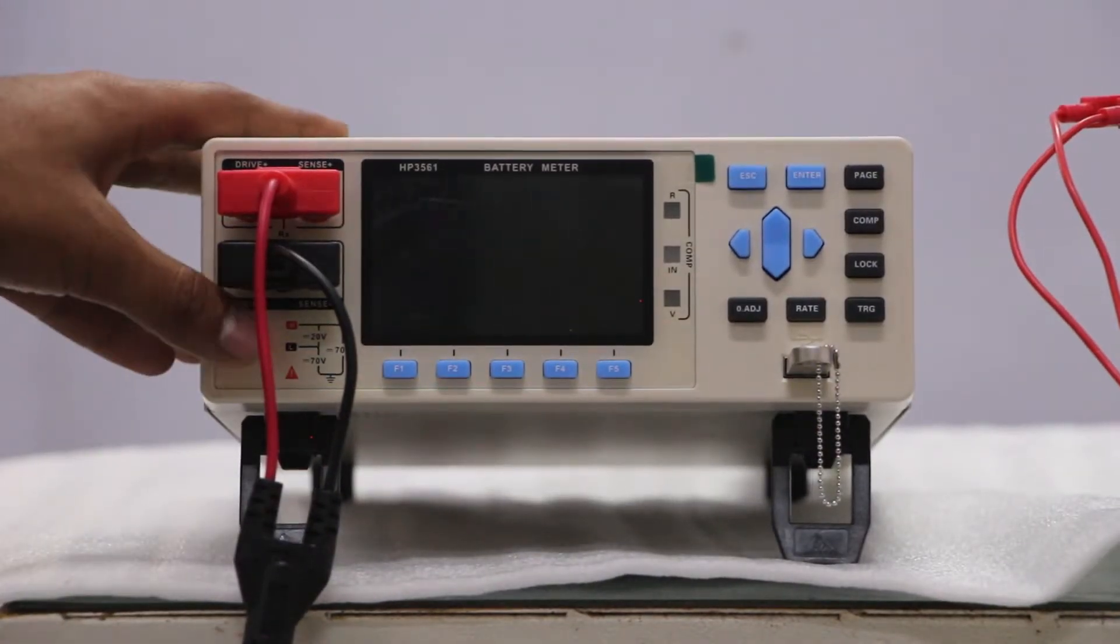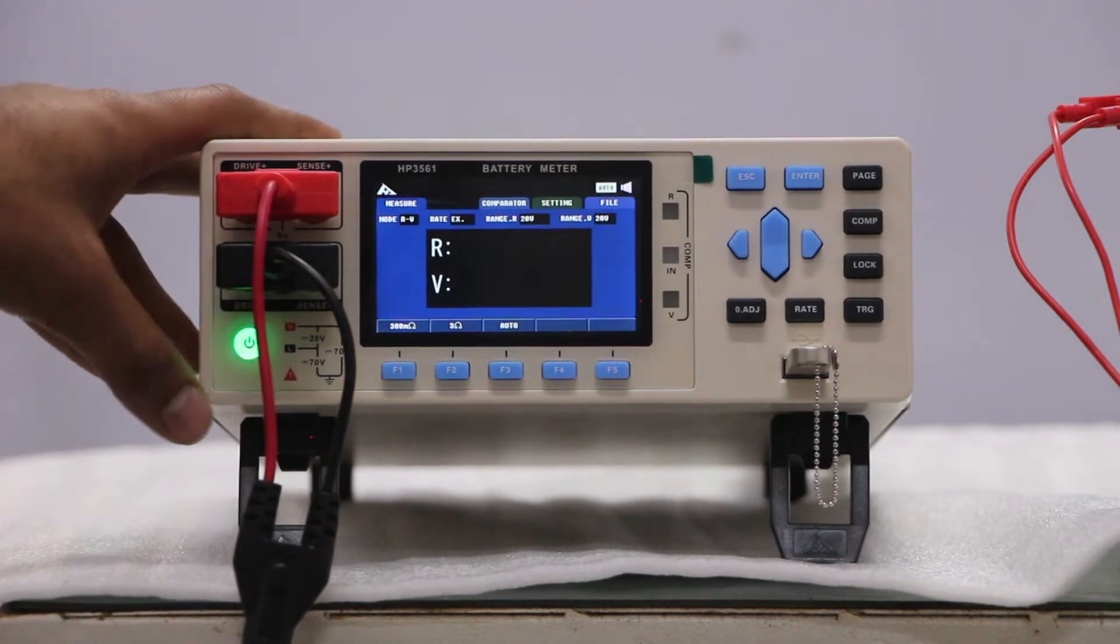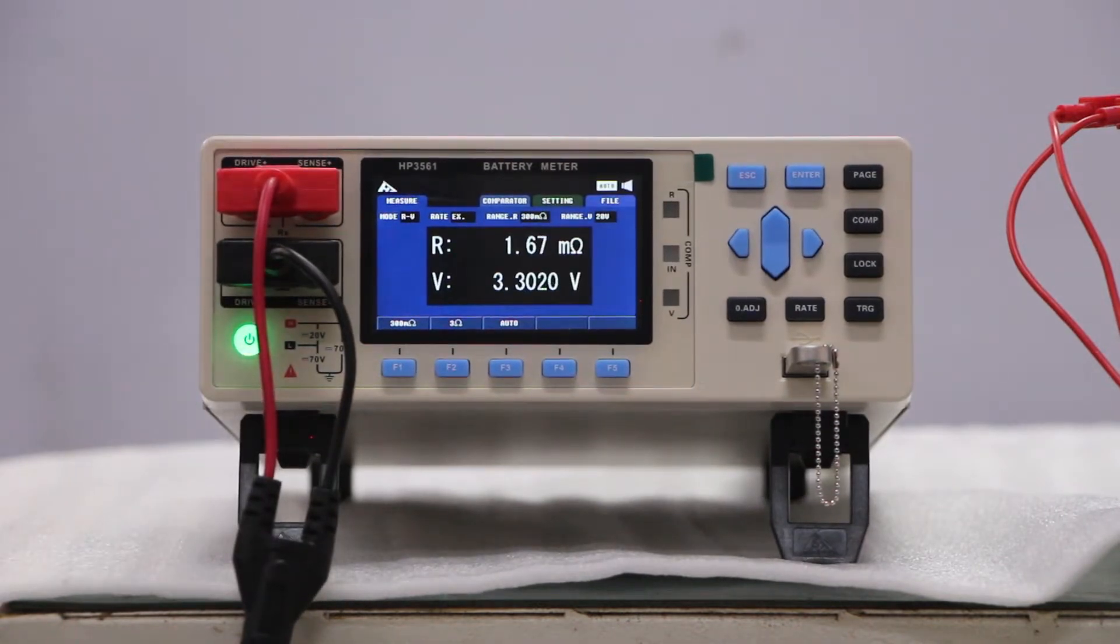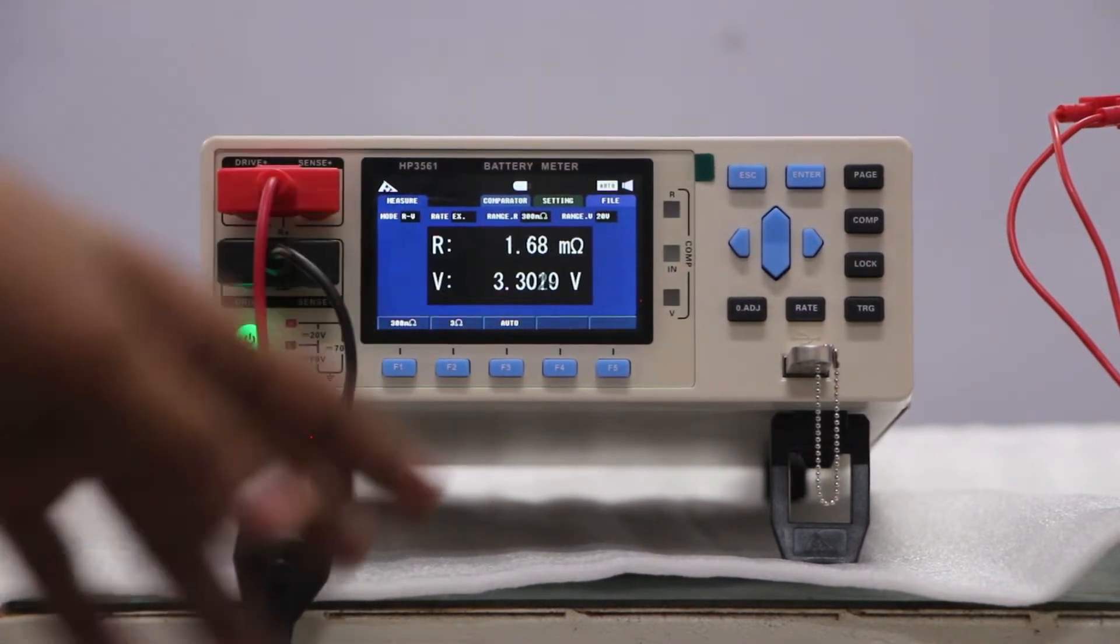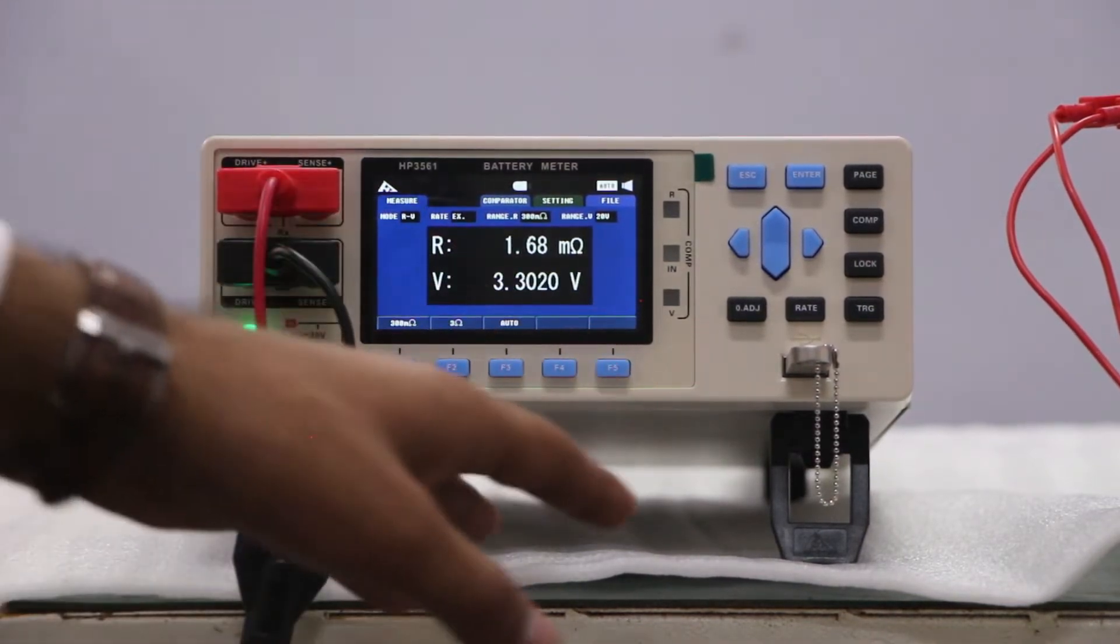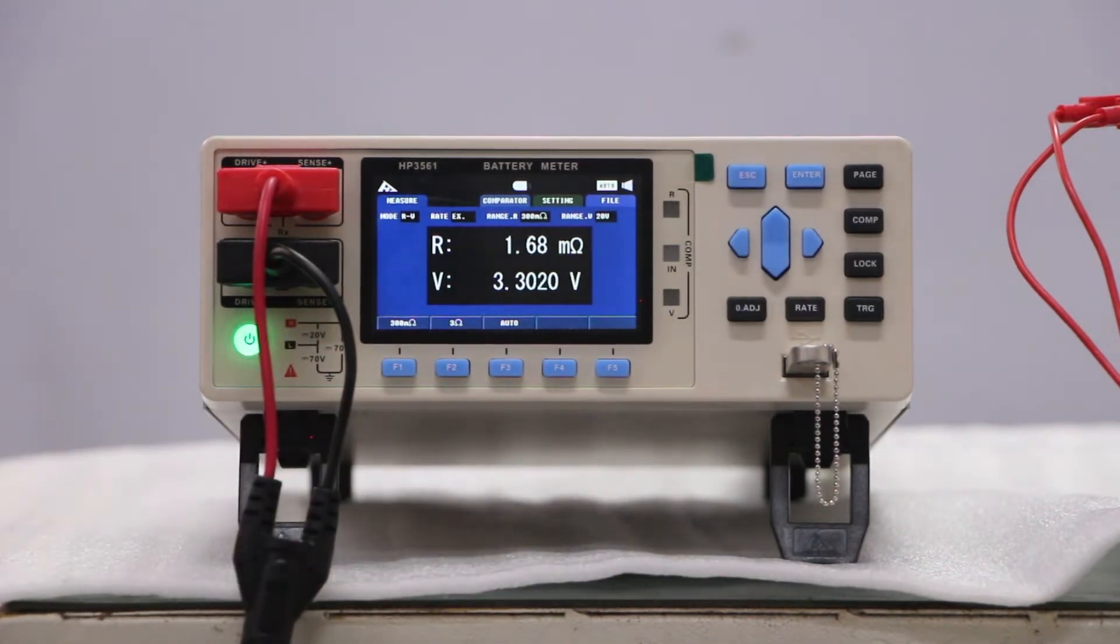Semco IR3561 tester comes with range of 3 ohm in IR and voltage range is 20 volts. So you can test up to 20 volt and 3 ohm. It comes with different trigger processes like first you can trigger up to 300 milliohm, second trigger can be put up to 3 ohm and the voltage level can be made up to 20 volt.